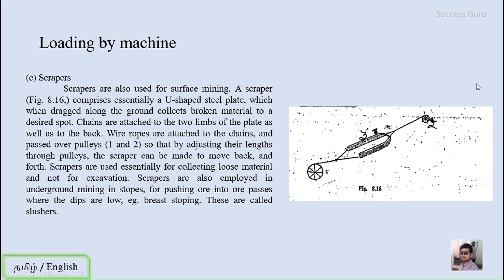There are two wire ropes — rope one and rope two — and pulley one and pulley two. By adjusting the length of the wire rope through the pulley, the scraper can be made to move back and forth. By this movement you can collect material that has already been broken down by blasting or any other method. Scrapers are used essentially for collecting loose materials and not for excavation — the prime work of the scraper is to collect broken rock material, not to break anything new.